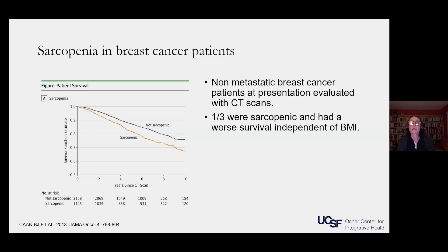I want to show you two slides about sarcopenia and cancer patients. This is a study done at Kaiser where they looked at patients diagnosed with breast cancer. At diagnosis, before they were treated, a third of them were sarcopenic. Those patients that were sarcopenic had a worse overall survival — the orange curve at the bottom shows their overall survival was worse, independent of their BMI and independent of their treatment, for those who had low muscle mass when they presented with their diagnosis.